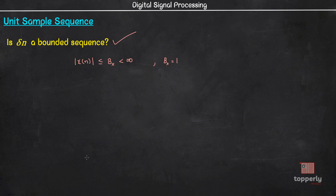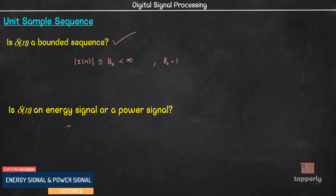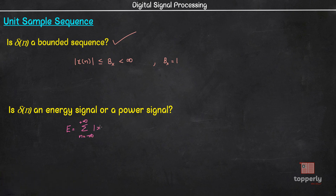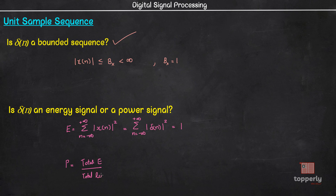Now let us see if δ(n) is an energy signal or a power signal. Energy E = Σ (from n = -∞ to +∞) |x(n)|² = Σ |δ(n)|², which equals 1. Therefore the energy is finite. Average power P = total energy / total length = 1 / ∞ = 0. So we have finite energy and zero average power, therefore δ(n) is an energy signal.